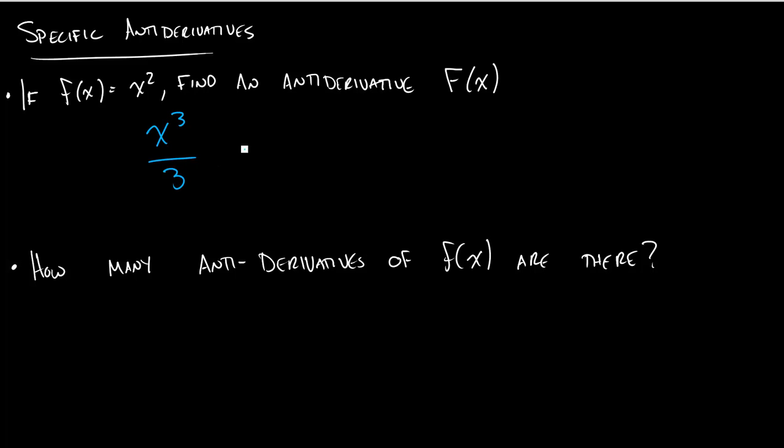It's x cubed over 3 plus c, and we're not really thinking about what this plus c means. But what it really means is this is any fixed number. So this is one antiderivative, one example.